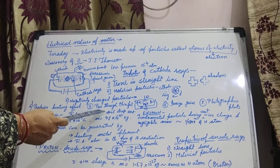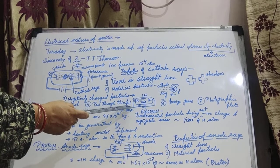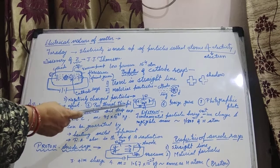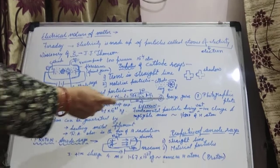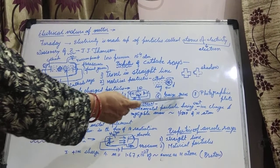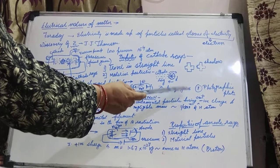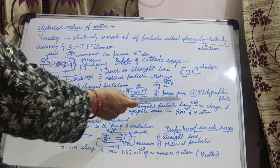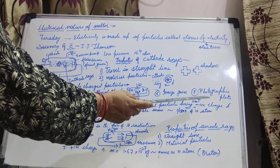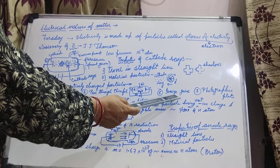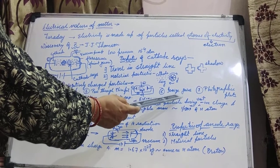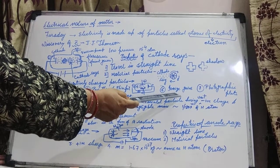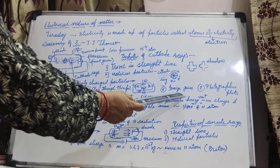The next property is that cathode rays can pass through thin foil of metals, meaning they have high penetration power. Next, they have the tendency to ionize the gases. Ionize the gases meaning if we take hydrogen gas, it breaks into positive and negative charges — electrons move out, leaving behind positive charge. So cathode rays have high penetration power and the tendency to ionize gases and produce heating effect.